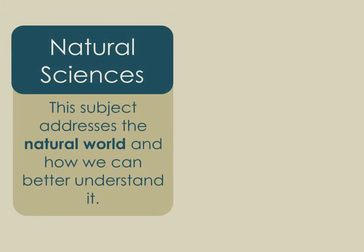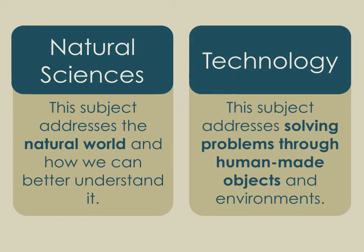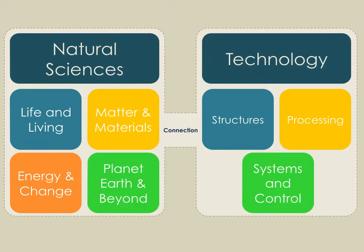Natural sciences addresses the natural world and how we can better understand it, whereas technology addresses solving problems through human-made objects — and it's essential to form that connection between the two. In natural sciences we look at life and living, matter and materials, energy and change, and planet Earth and beyond. In technology we look at structures, processing, and systems and control. It's essential to maintain that connection.